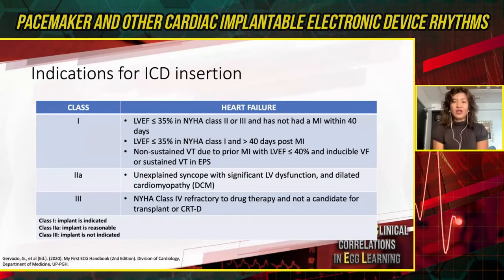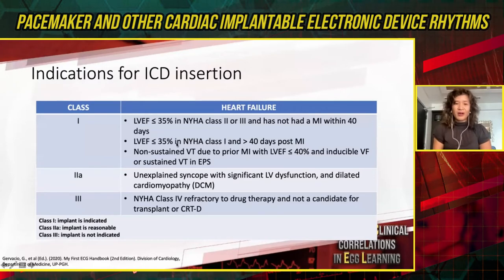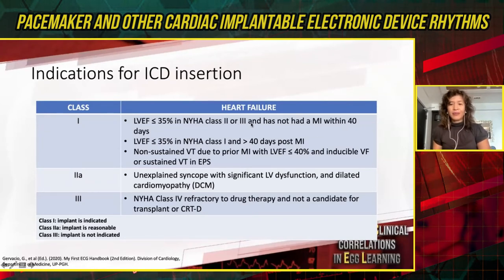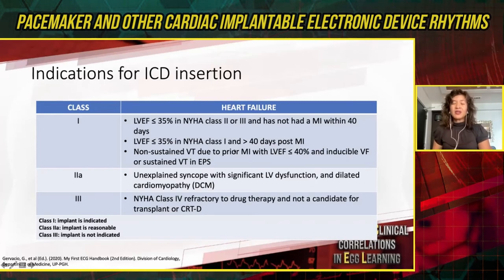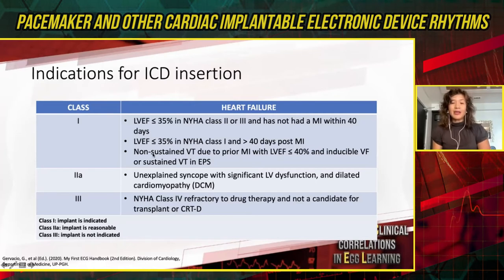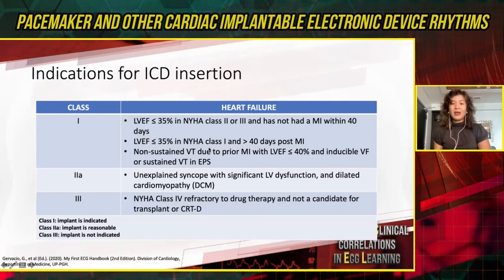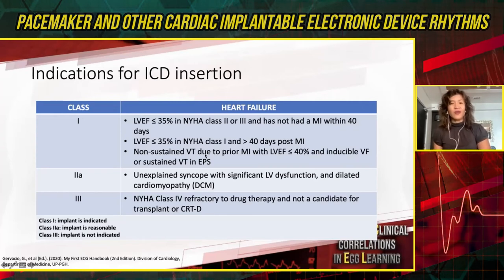The primary prevention indications apply to patients who have not had VT or VF yet but have markers for sudden death. The more important marker is a low EF that is irreversible, for patients in class 2 or 3 heart failure, and a low EF in a patient more than 40 days post-MI — assuming revascularization has been done and the EF remains low. From the MADIT trial: patients with EF less than 40% and non-sustained VT from a prior MI, who on EP study have inducible sustained VT, have a very strong indication for ICD. Class 2A includes unexplained syncope, significant LV dysfunction, and dilated cardiomyopathy.